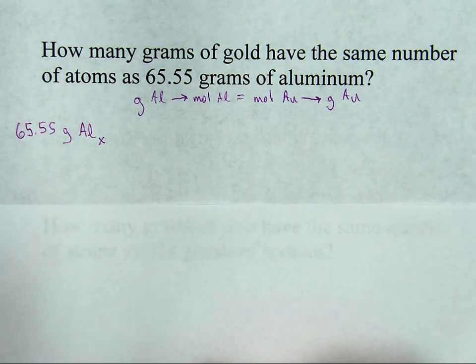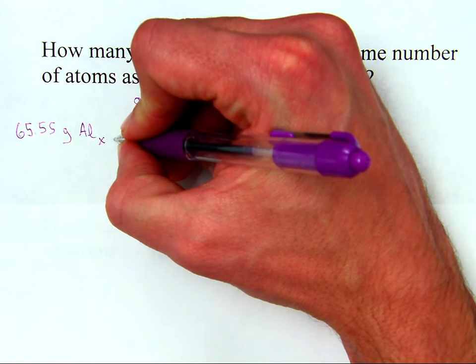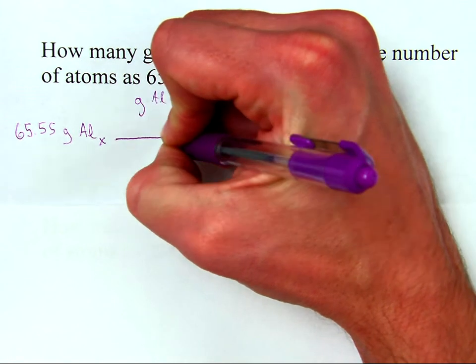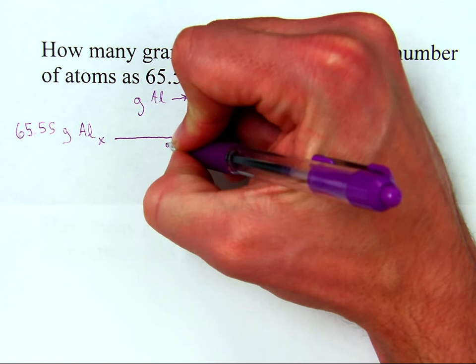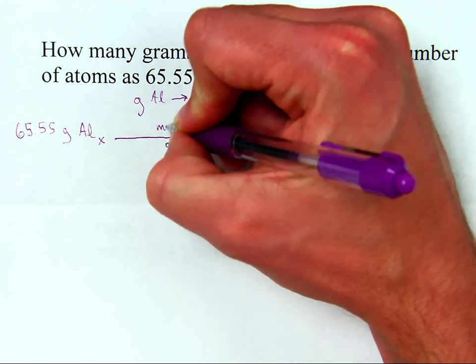So that gives a molar mass of 26.98. So here's what I'm going to do. I know I need grams to cancel. So grams goes on the bottom. Molar mass is grams per mole.